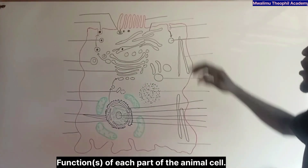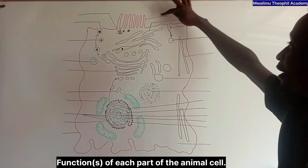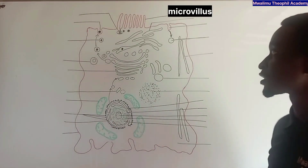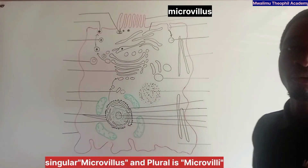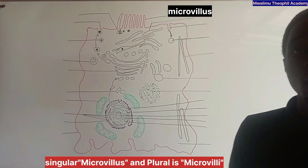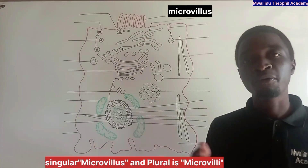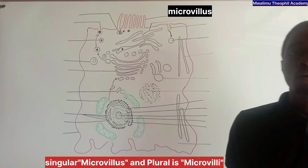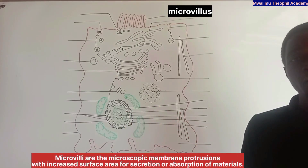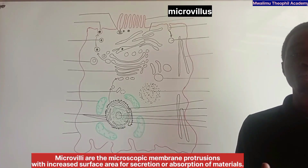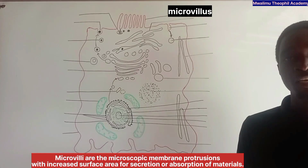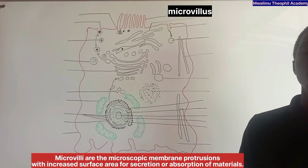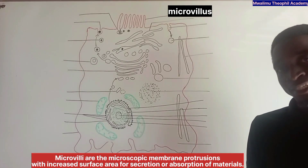Let us start with the first part. This is microvilli. The plural form of microvilli is microvillus. Microvilli are microscopic membrane protrusions that increase surface area for secretion or absorption of materials.